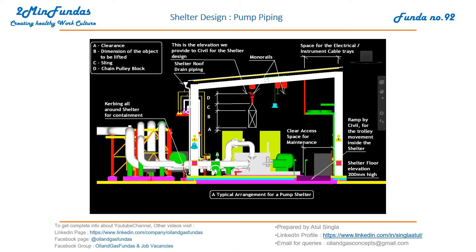Above that, the elevation should be decided by the vendor providing the hook, and later these designs should be finalized by the civil team. In this case, we are providing a monorail with a hook arrangement. The piping comes outside the shelter and runs on slippers or some kind of structure, and at this end we have electrical and instrumentation cable tray spacing allocated in this mid-space.